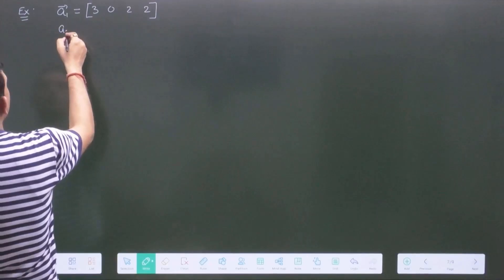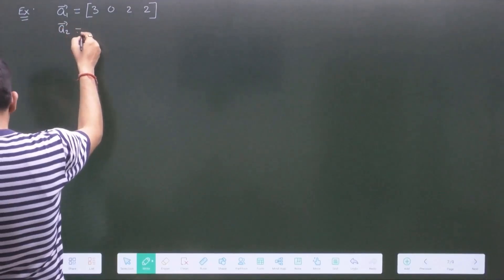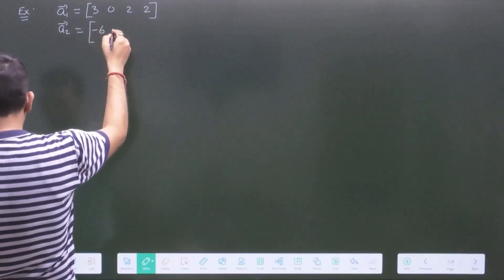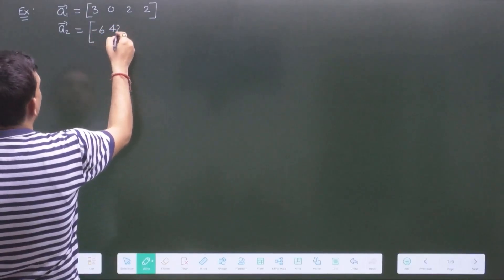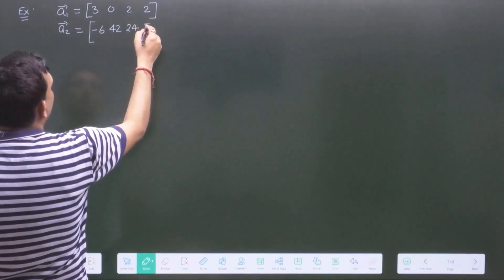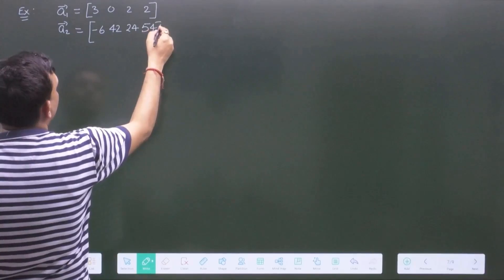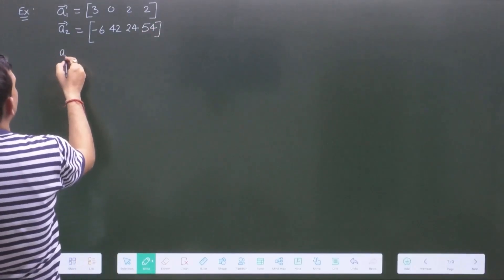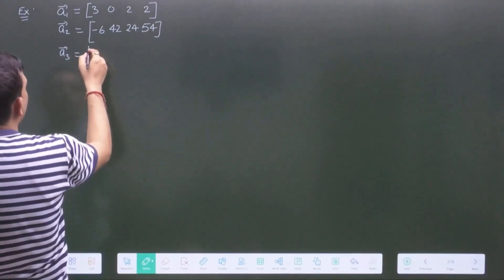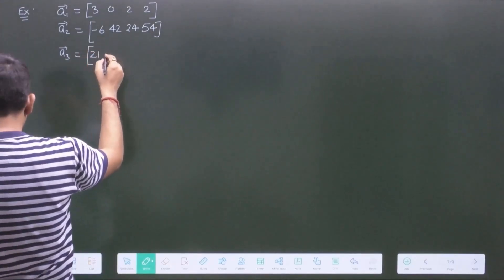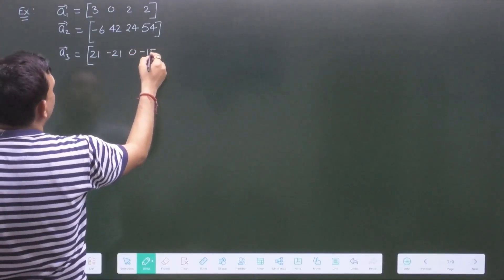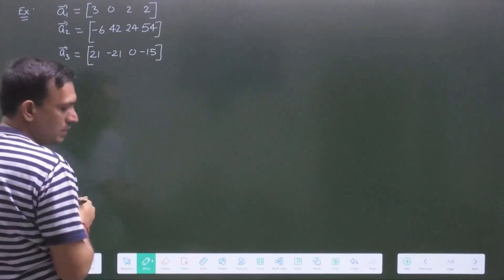Next vector is a2. So, this is minus 6, 42, 24, 54. And a3 is 21, minus 21, 0 and minus 15. This is the case.